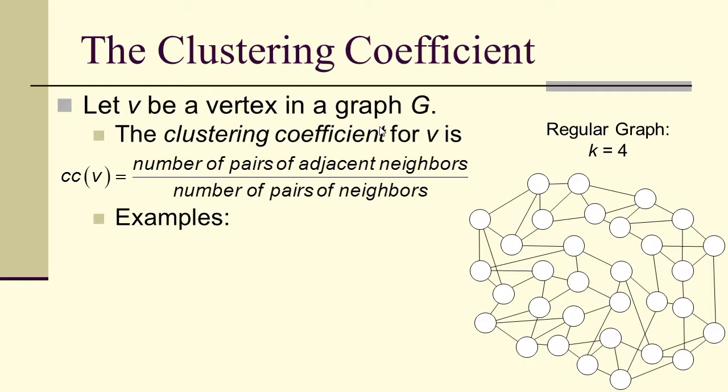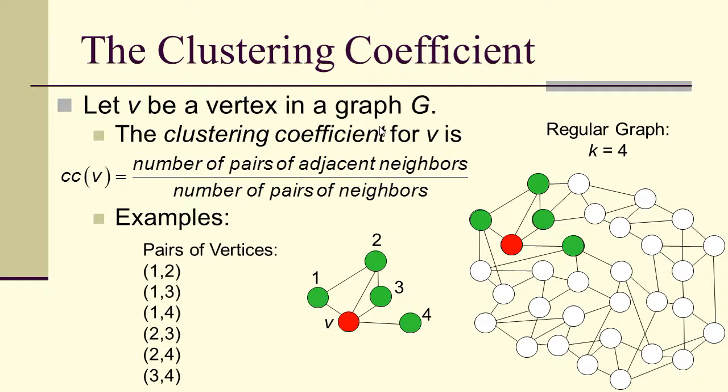For example, we've got this regular graph, k equals 4. If we pick a vertex, it has 4 neighbors, which we'll label as 1, 2, 3, 4. How many possible pairings of the neighbors are there? Well, there are 6: 1 with 2, 1 with 3, 1 with 4, 2 with 3, 2 with 4, and 3 with 4.